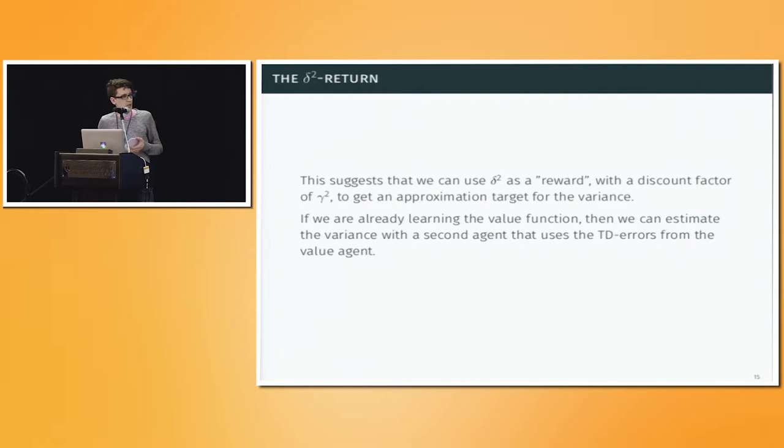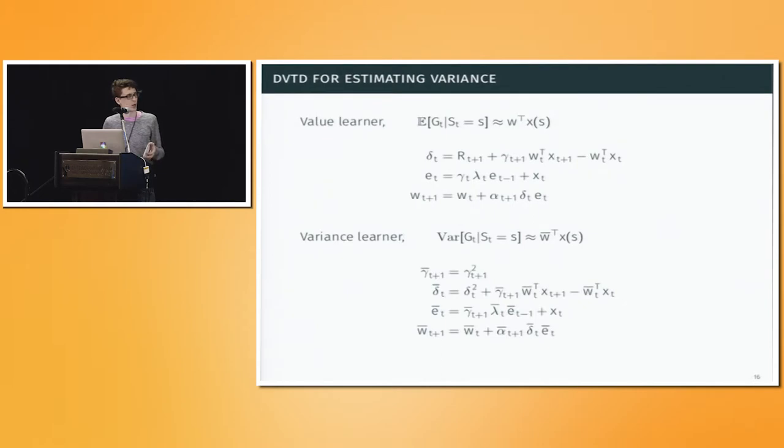So, in this case, we're doing something similar to the second moment approach. We're using delta squared as a reward and a discount factor of gamma squared. And then we have an approximation target for which we can learn the variance. This sort of assumes that we already have a value function, and you can get one by just using TD. And then you attach a second TD algorithm, and then you're able to learn the variance using these chained TD algorithms with all the advantages of TD. And it actually works pretty well.